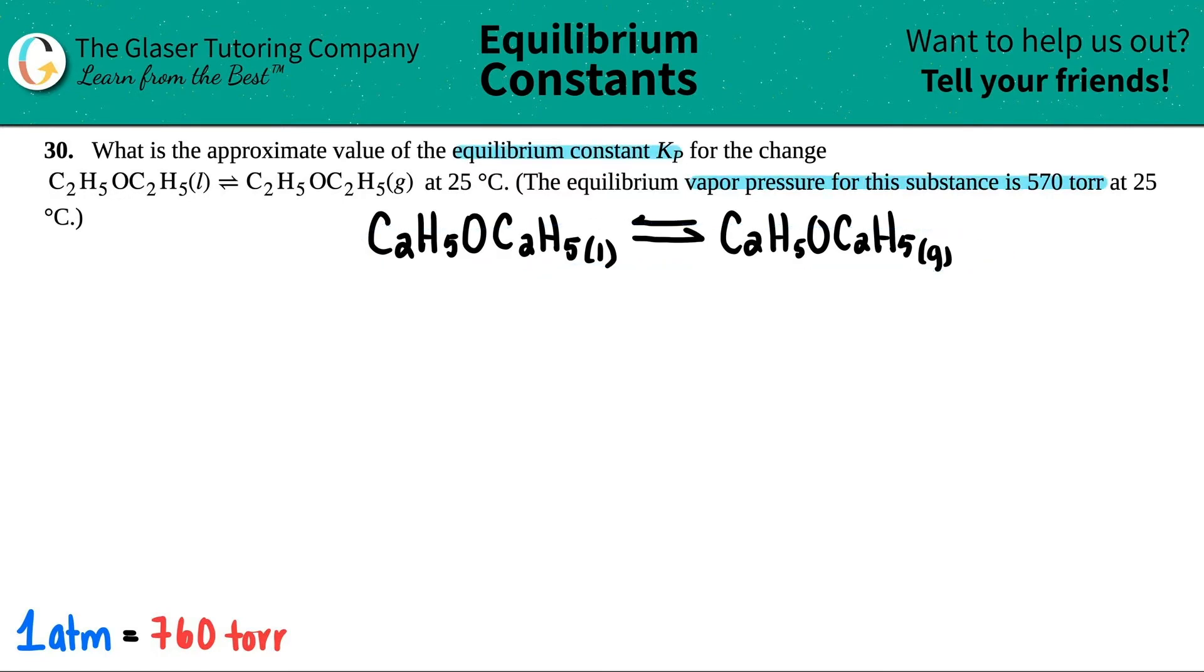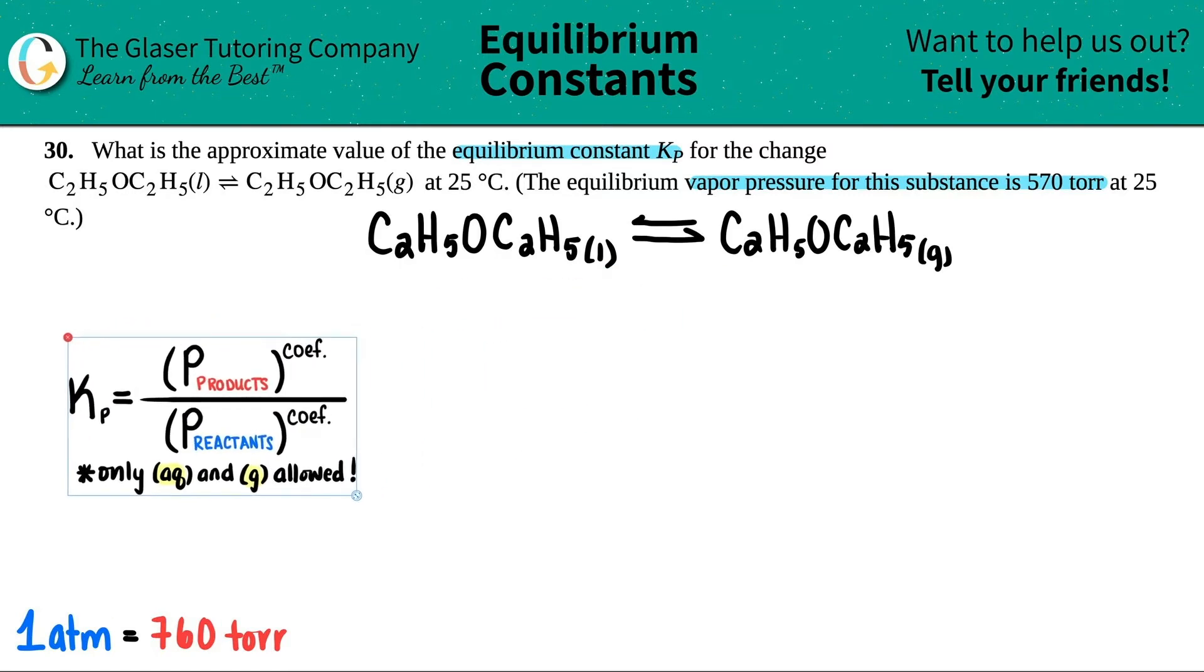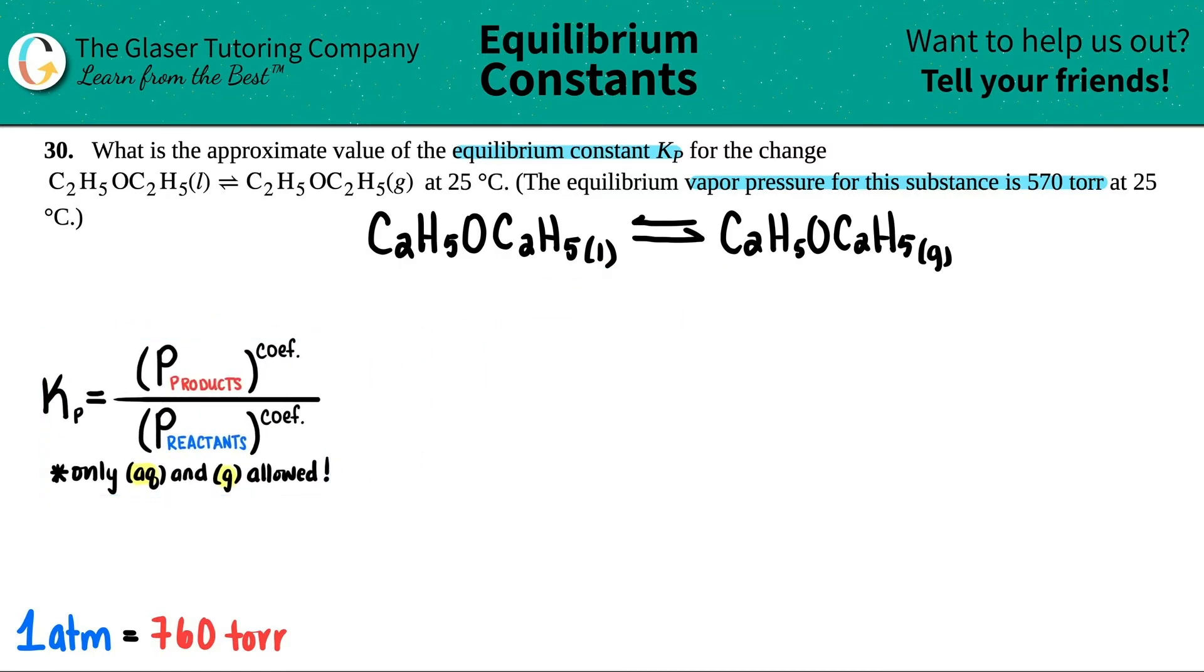But I digress, let's keep going here. We want to find out the Kp value, right? The Kp formula is this right here. The Kp is just the pressure of the products raised to the coefficients divided by the pressure of the reactants.